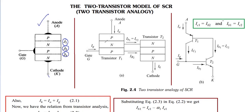To understand how each junction and gate controls the turn-on trigger of the SCR, we use a model. Since we have four layers and three junctions, these can be separated into two transistors. The first three layers P-N-P are separated as one transistor, T1, and the other transistor is N-P-N, giving us T2.